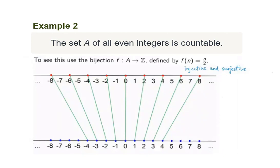Now, we found a function F that maps A to Z defined by F(n) = n/2. We can check that this function is both injective and surjective. Thus, there is a bijective function that maps A to Z. Hence, A is countable. Another reason is that since the set of integers is countable and the set of all even integers is a subset of Z, therefore the set of even integers is also countable.